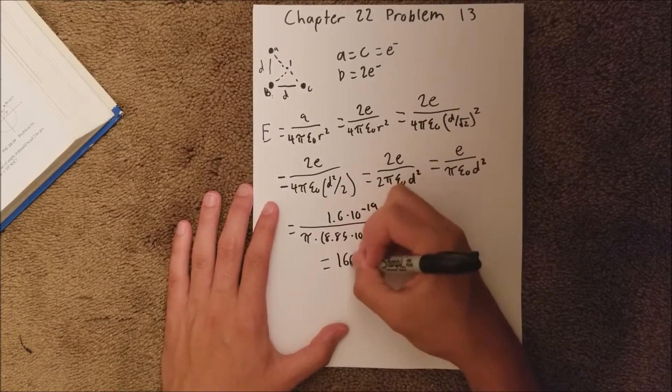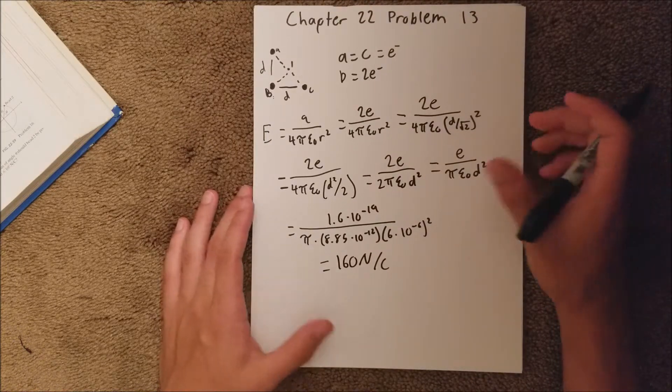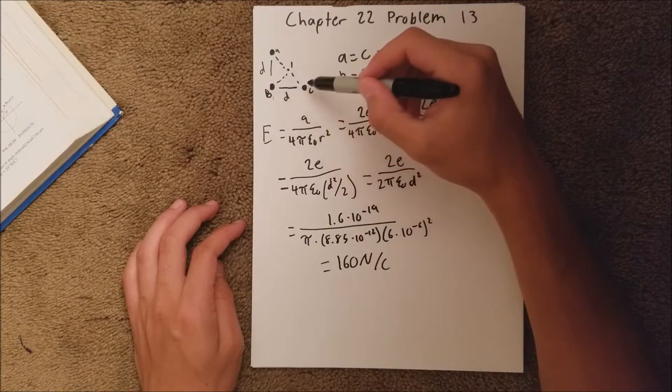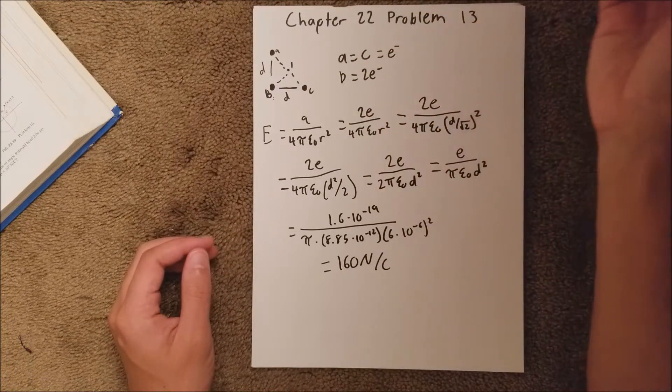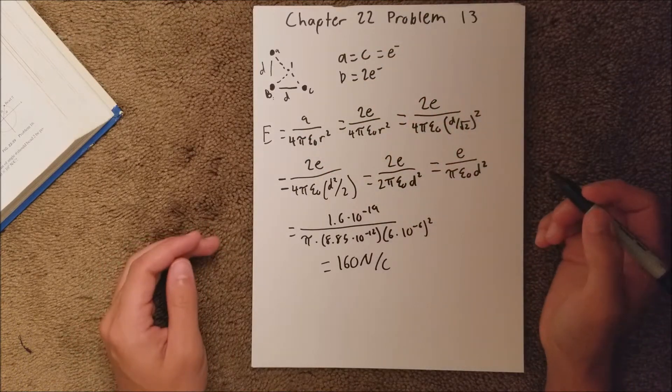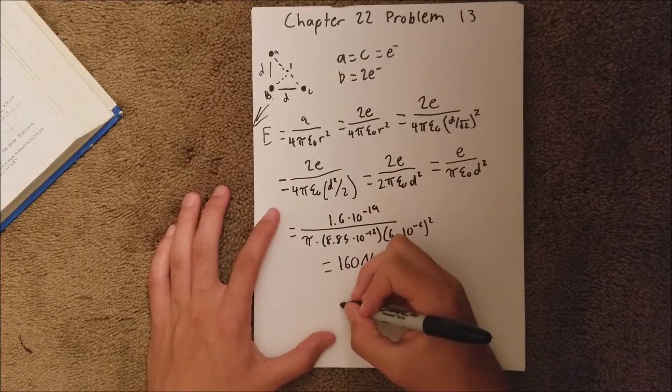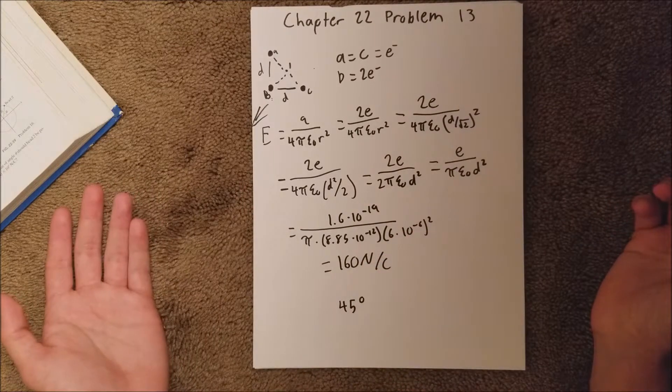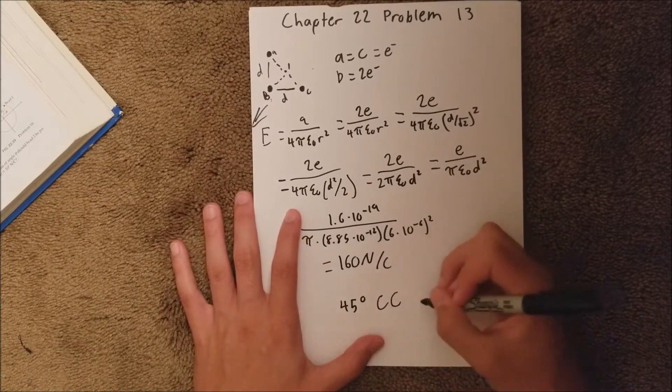And when you put all that into your calculator, you should get 160 newtons per coulomb for the electric field. And the direction, if you look here, since these are electrons, they're negatively charged. And this point, the assumption is that it's positive, so it'll go towards particle B. So that means the electric field will be pointed this way, which is 45 degrees, and we can say 45 degrees counterclockwise of the x-axis.